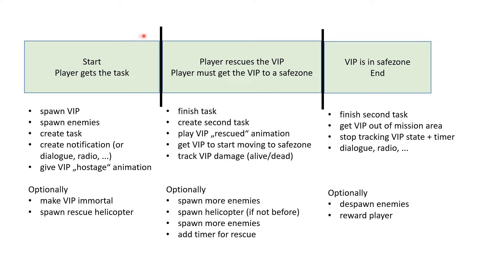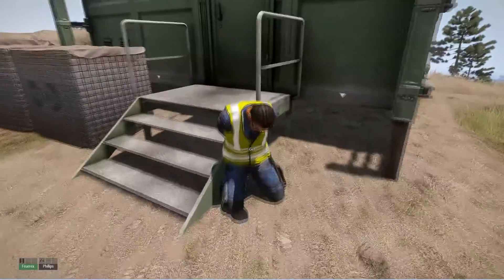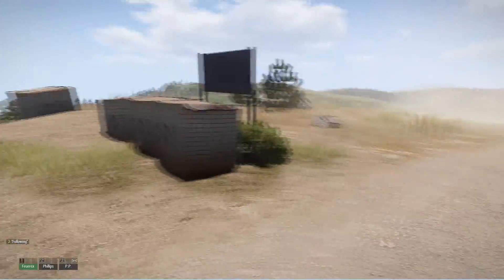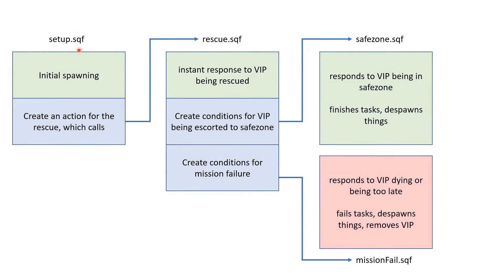Once the player interacts with the VIP, I need to update the tasks, maybe play some animations and dialogue, maybe spawn more enemies or redirect existing ones. I can spawn the rescue helicopter if it hasn't spawned already. Maybe I can set a time limit — the player calls the helicopter, but since enemies are closing in, the heli only has X minutes before it takes off. This adds tension to the mission. Since I already planned how that would happen using addAction, I have naturally split my code into two scripts. The first part runs at the very start and prepares things for phase 2. The second script picks up once phase 2 starts, does some immediate stuff, and prepares things for later.